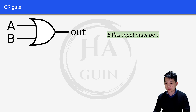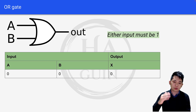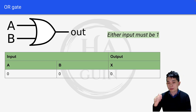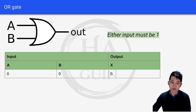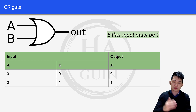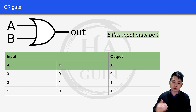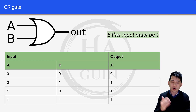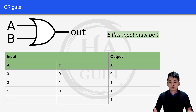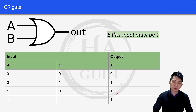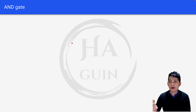So let's look at the table itself. When A and B are both 0, the output X will be 0. Then 0, 1 is equal to 1. Then 1, 0 is equal to 1. And 1, 1 is equal to 1. So if you look at this table, when either of the inputs is 1, the output is always 1.